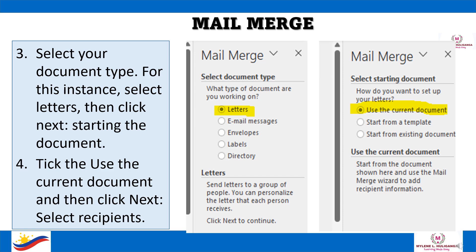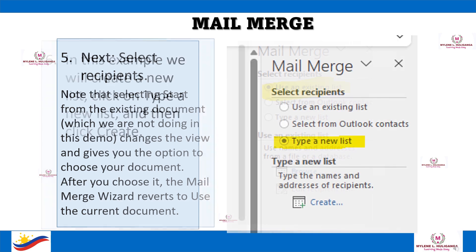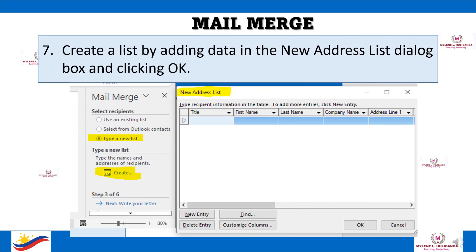Tick the Use the Current Document and then click Next, select Recipients. Note that selecting Start from the existing document — which we are not doing in this demo — changes the view and gives you the option to choose your document. After you choose it, the Mail Merge wizard reverts to use the current document. In this example, we will create a new list: click on Type a New List, and then click Create. Then create a list by adding data in the New Address List dialog box, and clicking OK.